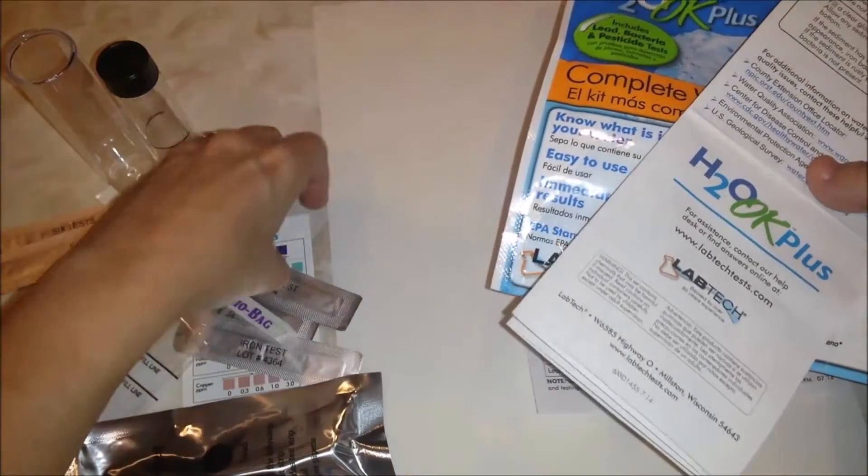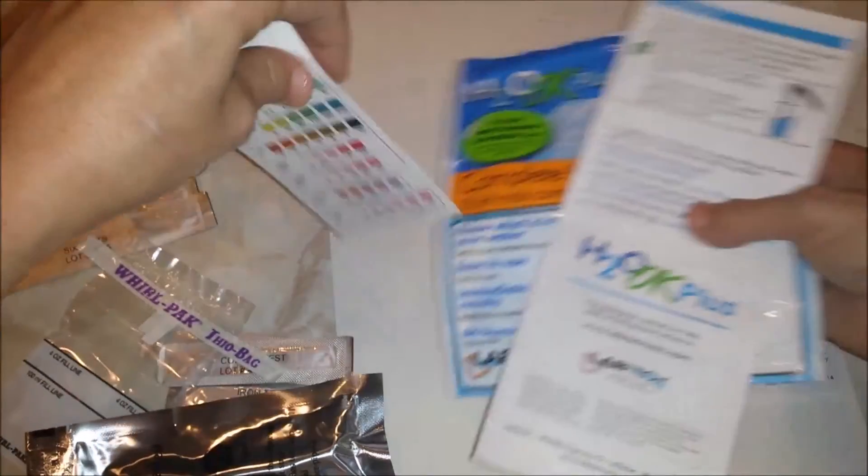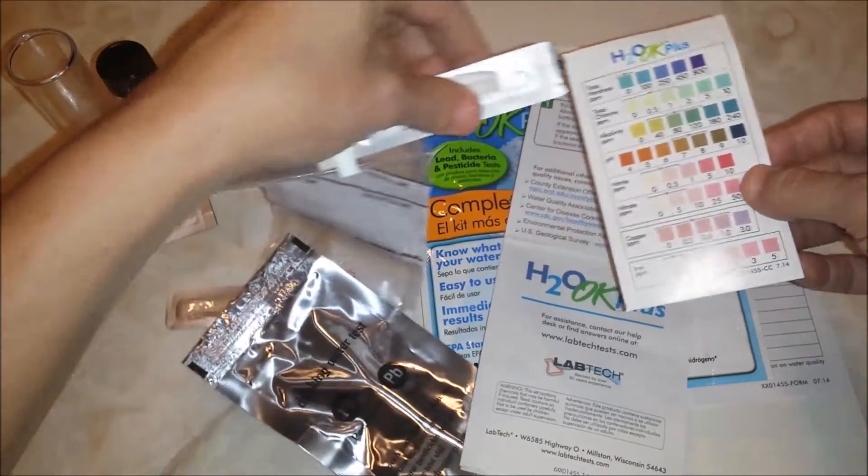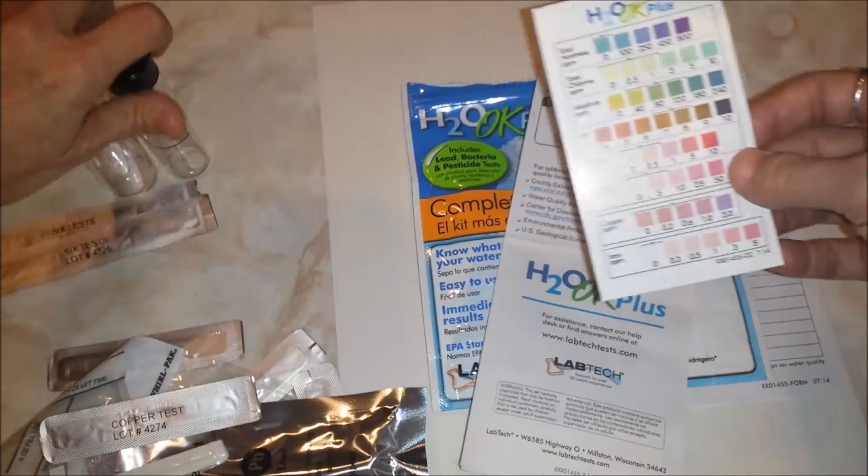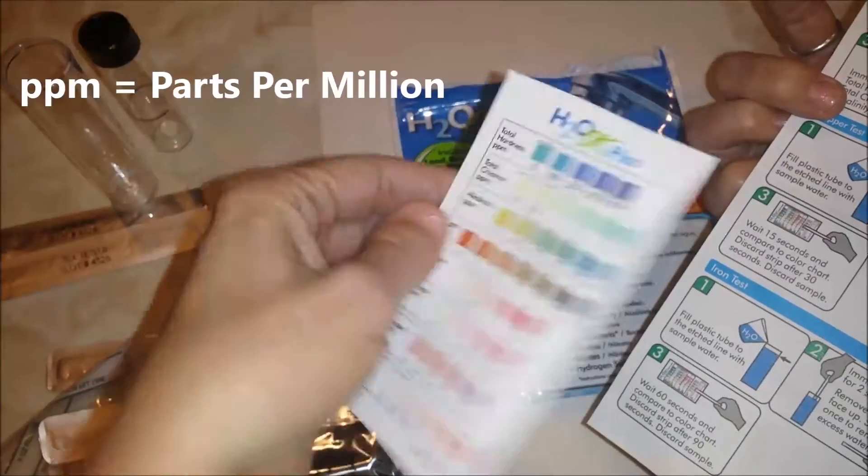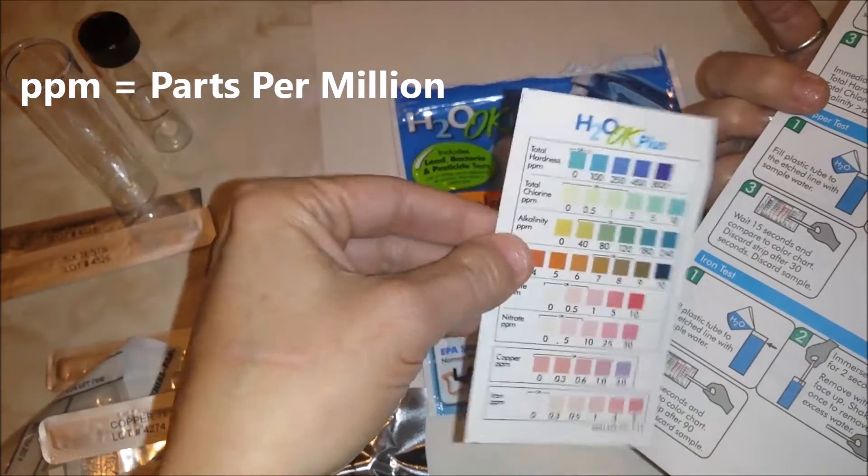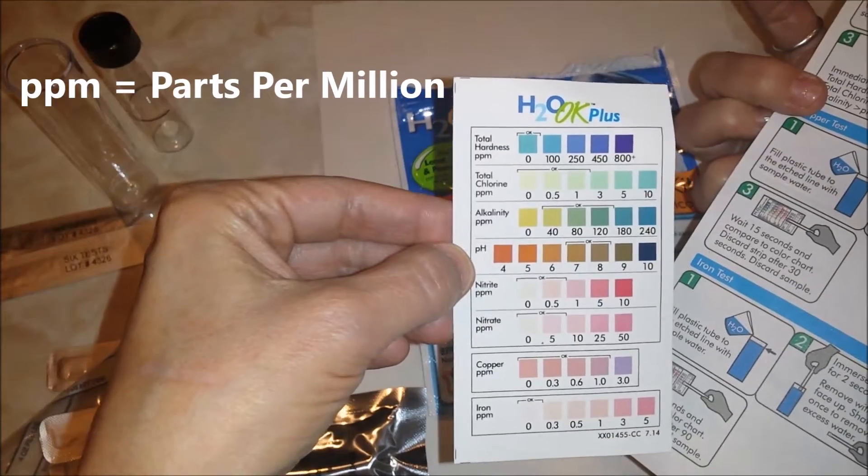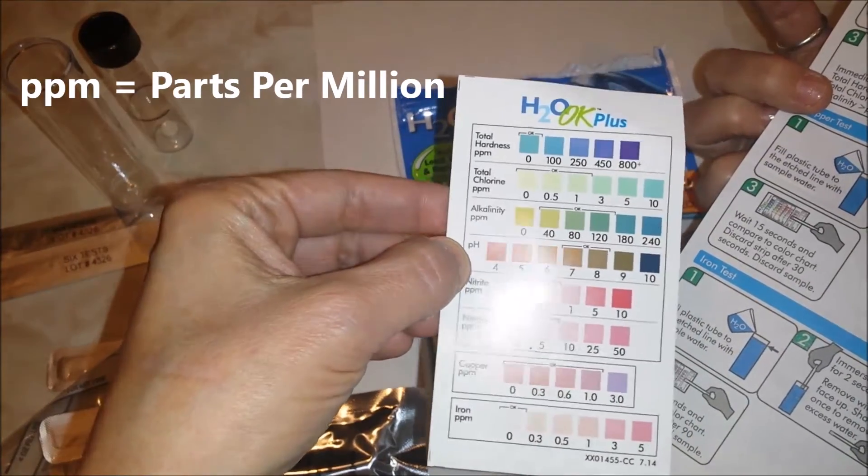It came with a hodgepodge of supplies - little test strips and stuff, little vials, and this little measurement guide to read the PPMs.